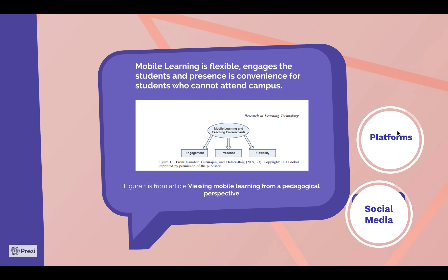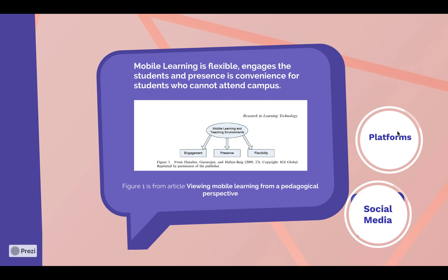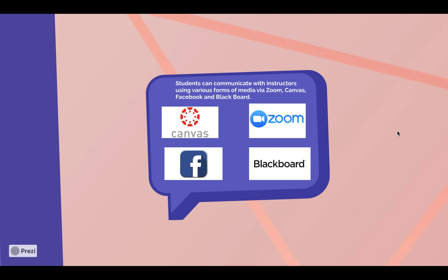This is an example of mobile learning. It explains how it is flexible and engages the students. The presence is important because of the convenience that students have now to do mobile learning from home, and this is actually a figure taken from an article.